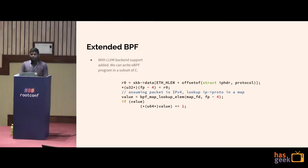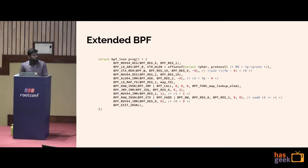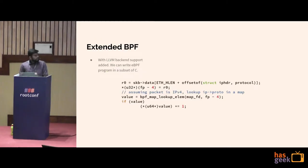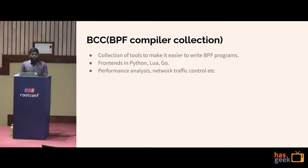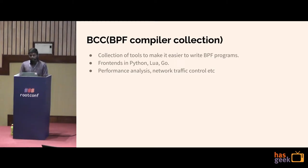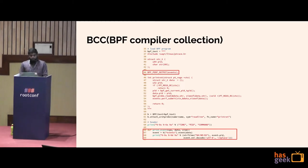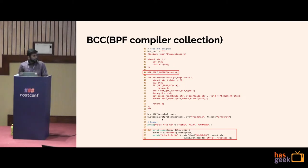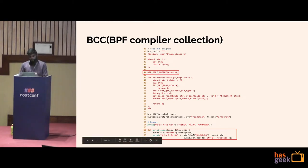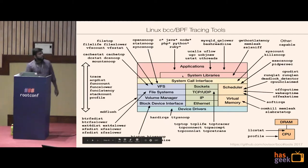For even easier development, there are BCC tools — libraries that allow you to write eBPF programs much more easily than writing raw assembly or instructions. A BCC program has inline code for your tracing or networking logic, and you process data in Python, Go, Rust, Lua, or other supported languages. Map creation is much simpler — you just declare what maps you need. The BCC toolset is growing daily.